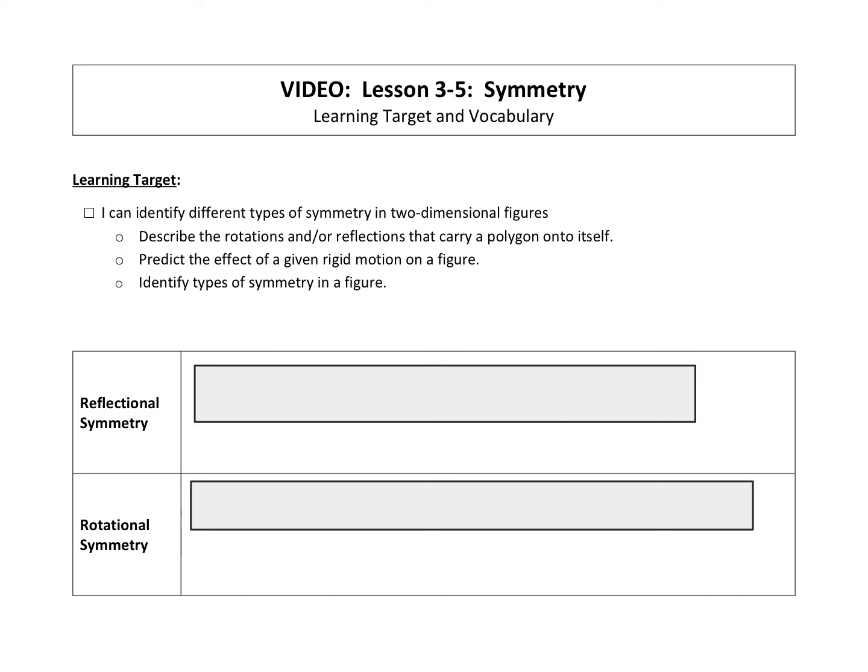So our vocab that we want in our notes: first we've got something called reflectional symmetry. A figure that maps onto itself when it is reflected over a line has reflectional symmetry. So what that could look like, just as an example...